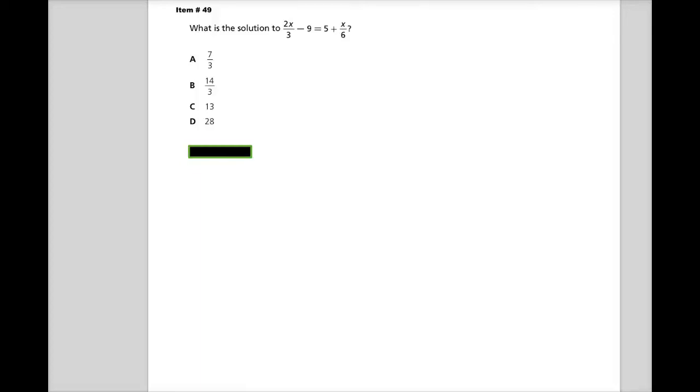Welcome, this is item number 49 from the released spring 2014 test items for Algebra 1 for Tennessee. The question says, what is the solution to 2x over 3 minus 9 equals 5 plus x over 6?